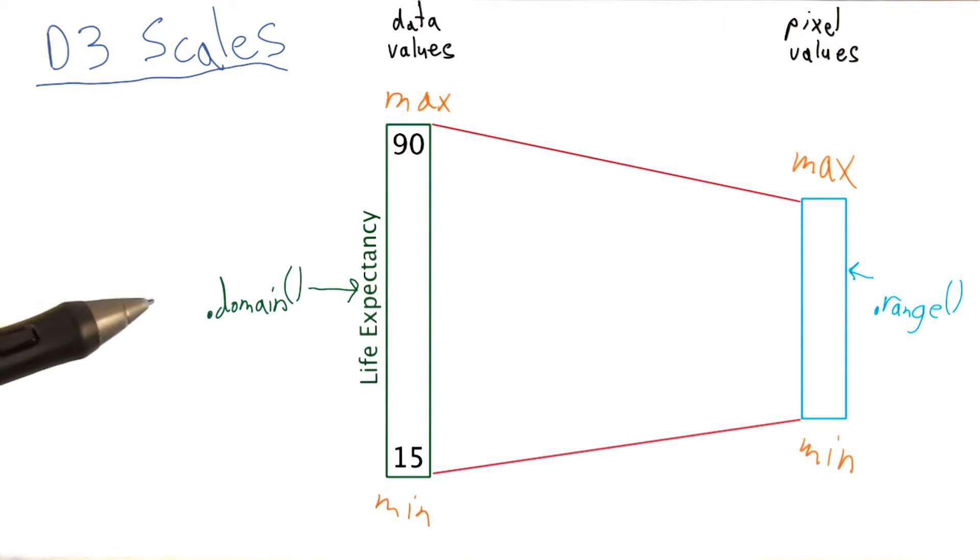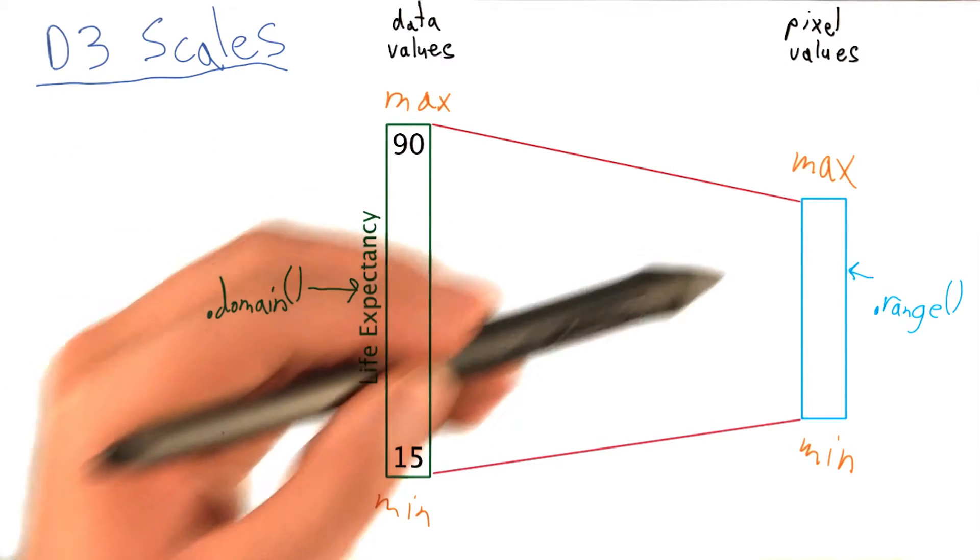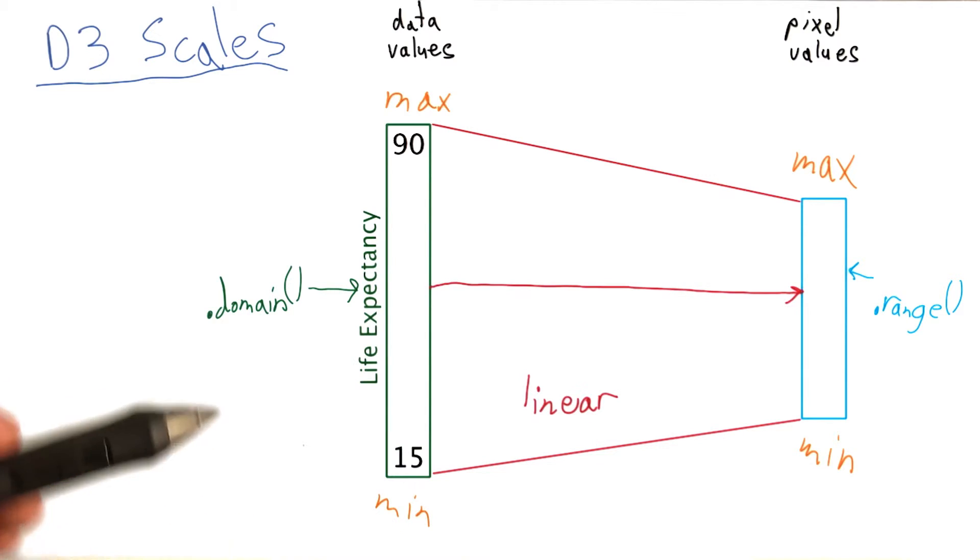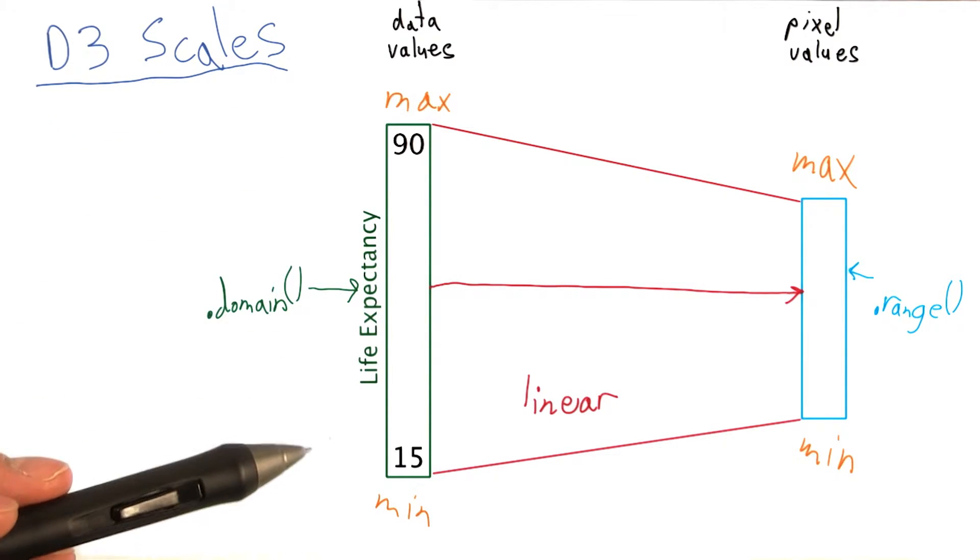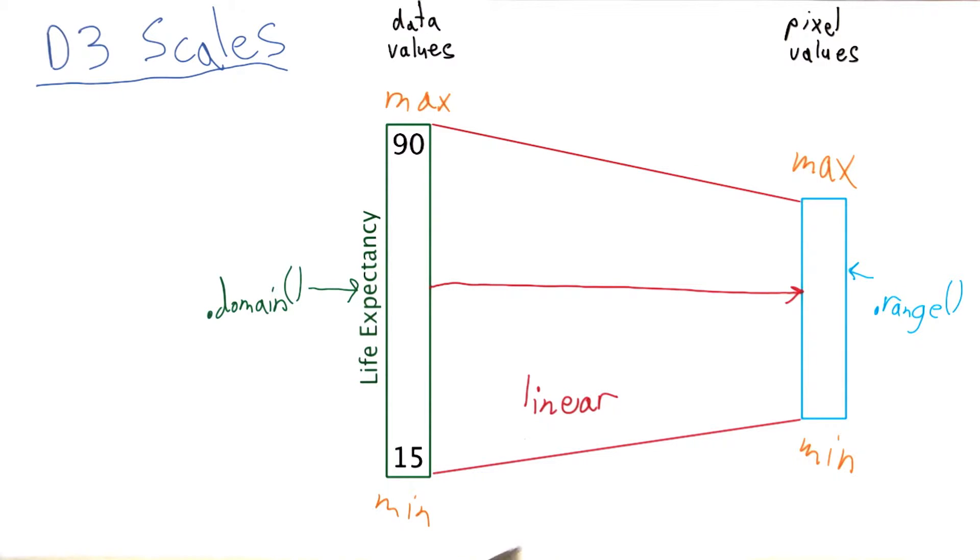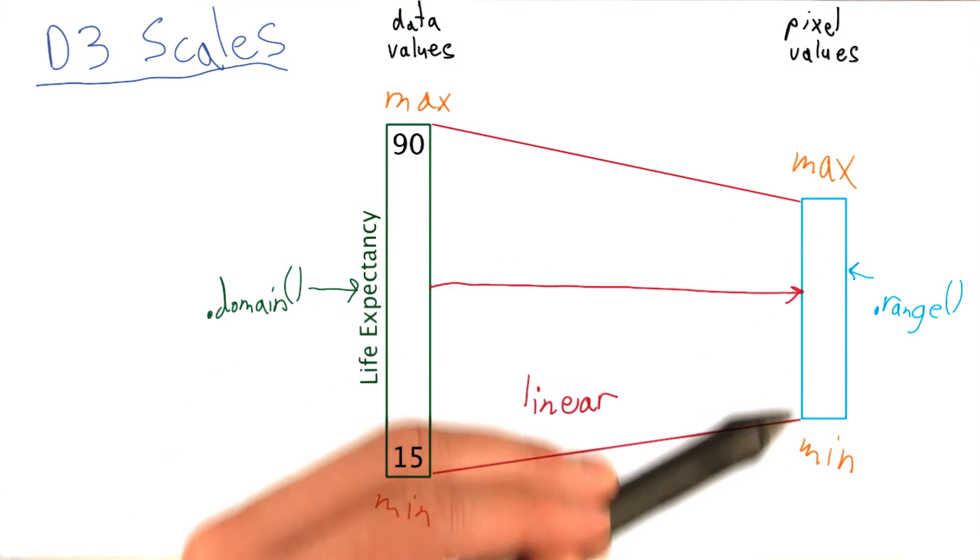In order to transform our domain into the range, we often have to specify what type of function we would like to use to convert the values from the data into pixel values. In the case of the life expectancy, the scale was linear in the Gapminder plot. So we want to use a linear function to map the domain values to the range.